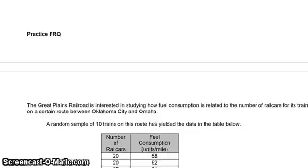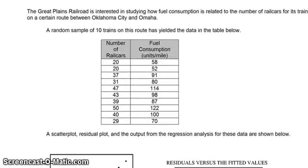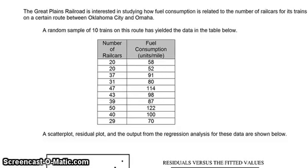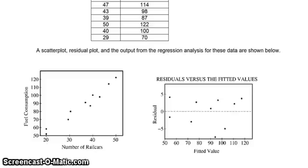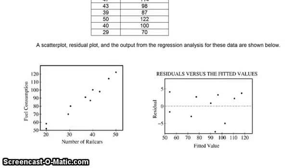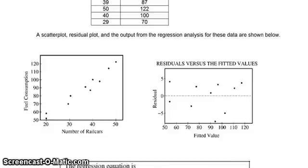Let's look at a practice FRQ. The Great Plains Railroad is interested in studying how fuel consumption is related to the number of rail cars for its trains. We're looking at a random sample. They gave us a scatter plot and they gave us a residual plot. Based on the scatter plot, it appears to be fairly linear. Based on the residual plot, that appears to be random. So far, I'm thinking this is a pretty good deal.